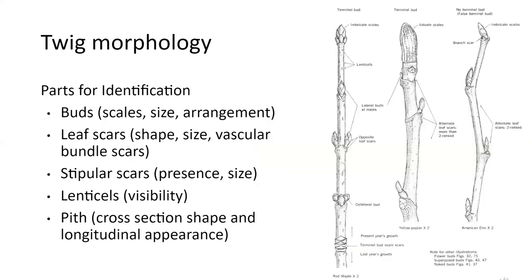Looking at twig morphology, there are several parts that can be helpful in identification. You look at the leaf buds — the scales that may cover the buds, the size and arrangement of the buds. We've already talked about leaf arrangement, so look carefully at the twig on the left and tell me what leaf arrangement that is. Then we have leaf scars — this is the point on the twig where a leaf was once attached, right below the bud. You can also have stipular scars right below the bud, where the tree had stipules that dropped off.